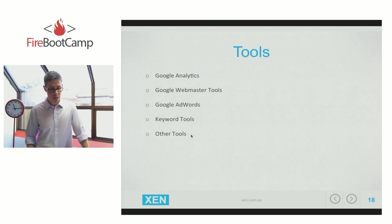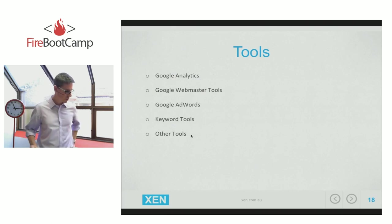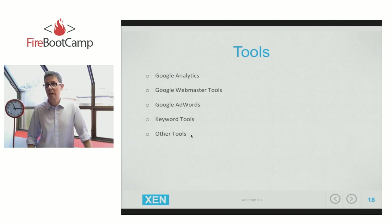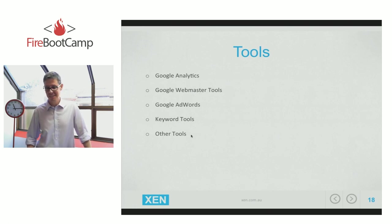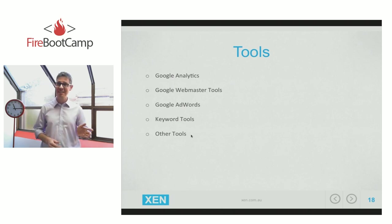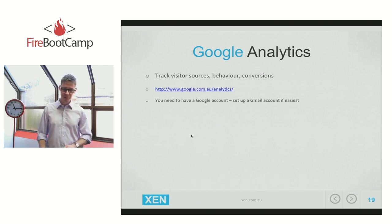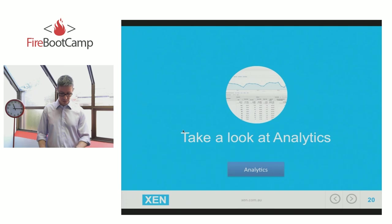Here are the tools we're going to look at today: Google Analytics, Google Webmaster Tools, maybe Google AdWords if there's time and interest, some keyword tools, and there's a whole bunch of other tools. So what is Google Analytics? It tracks visitor sources, behaviors, conversions, and things. If you don't already have a Google account, you'll need to set one up — just set up a Gmail account and then create your Analytics account. Let me walk you through what it looks like.